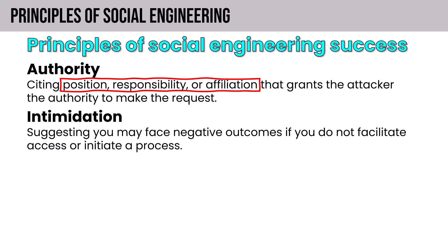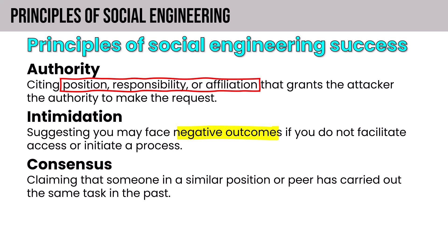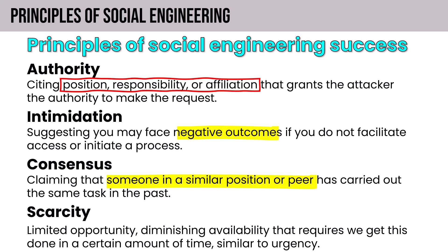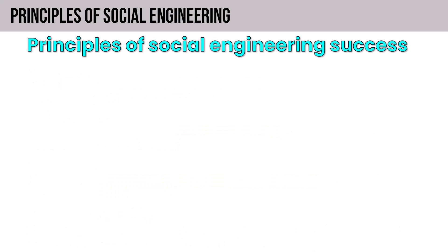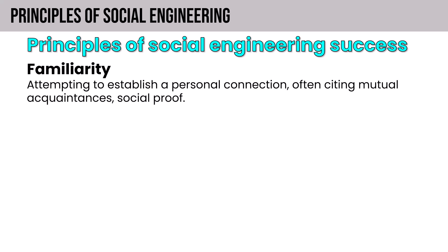Intimidation suggests you may face negative outcomes if you don't facilitate access or initiate a process. Consensus claims that someone in a similar position or peer has carried out the same task in the past. Scarcity focuses on limited opportunity and diminishing availability requiring action within a certain timeframe — it tends to focus on quantity, similar to urgency. Familiarity attempts to establish a personal connection, often citing mutual acquaintances and using social proof. We also call this liking — getting the victim to like the attacker, because we do things for people we like.